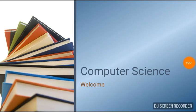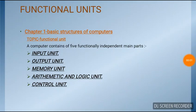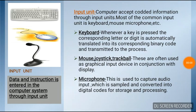Hello, welcome to the second video on computer science. Let's continue Chapter 1: Basic Structures of Computers. Topic: Functional Unit. A computer contains 5 functionally independent main parts — Category 1: Input Unit, Category 2: Output Unit, Category 3: Memory Unit, Category 4: Arithmetic and Logic Unit, Category 5: Control Unit.